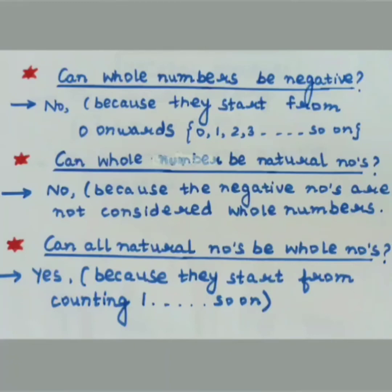Moving on to our third question: Can all natural numbers be whole numbers? Yes. Because natural numbers start from counting 1 onwards, whereas whole numbers start from 0. So in whole numbers, natural numbers are also included.